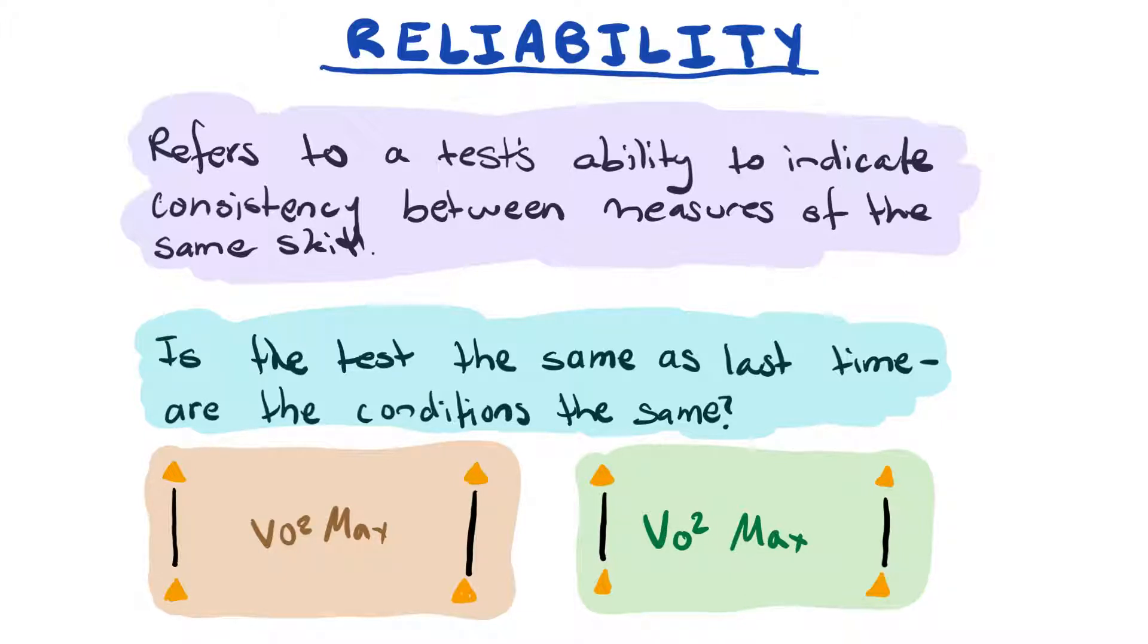For example, doing a VO2 max shuttle run here on a basketball court versus doing one on the grass, is that a reliable measure of results? Because they're two very different surfaces. Not only is the surface softer on grass, but the ability to turn is probably a little bit more difficult than what it is on a hard basketball court. So we need to ensure that our tests are reliable.